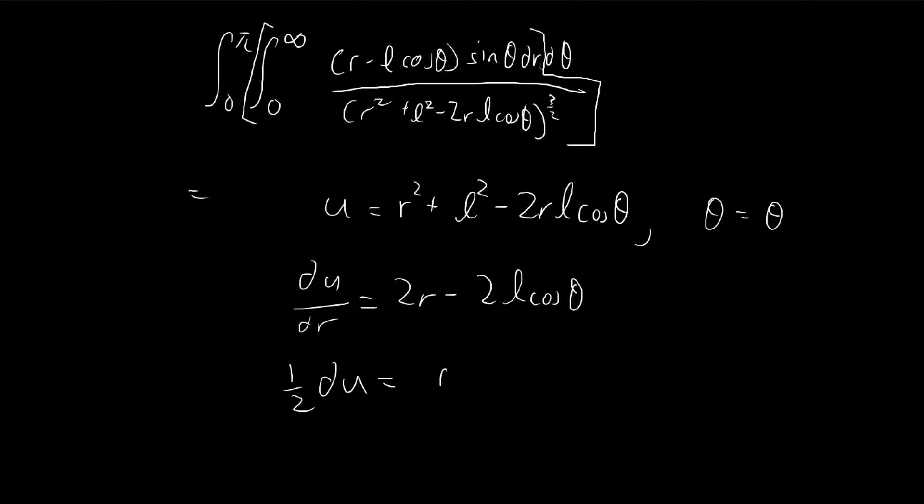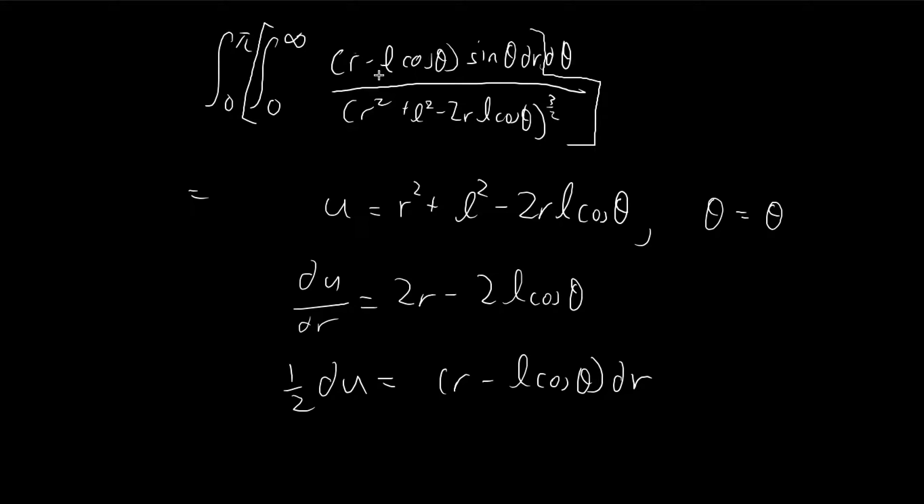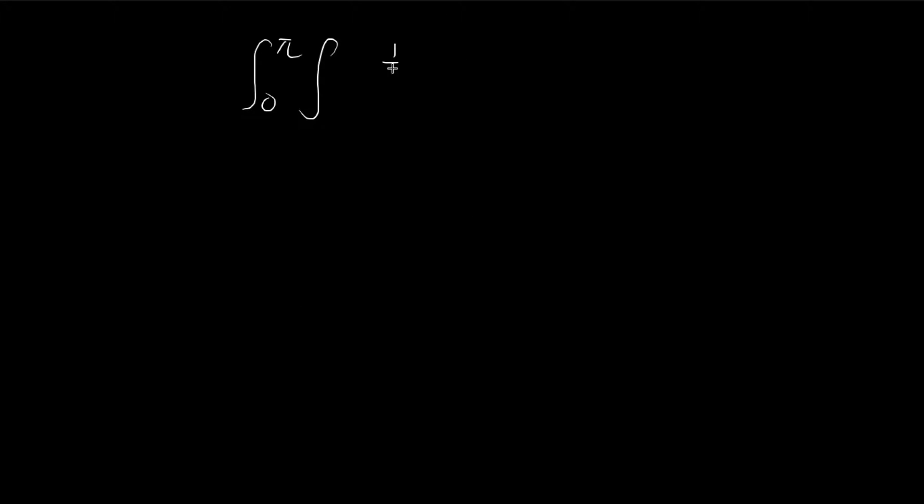So you can see that r minus l cosine theta times dr is equal to one half du. So I'm going to do the substitution. So this whole thing becomes one half du. There's a sine theta in the middle, du. And the denominator, that's just u to the power of three over two, and there's also a dθ.